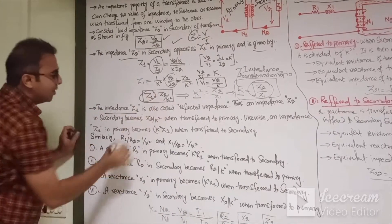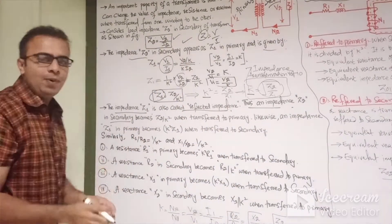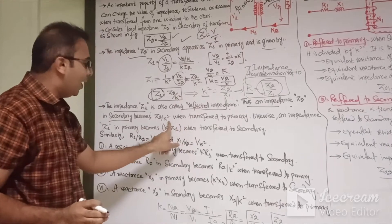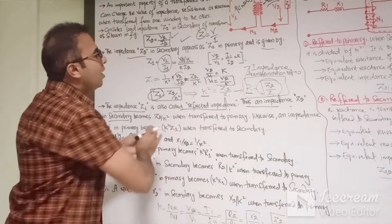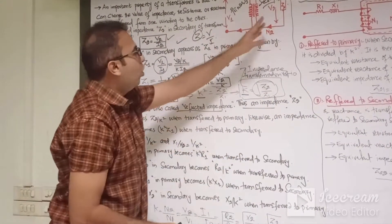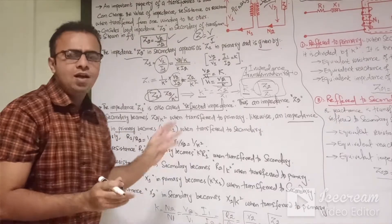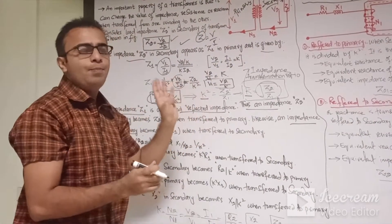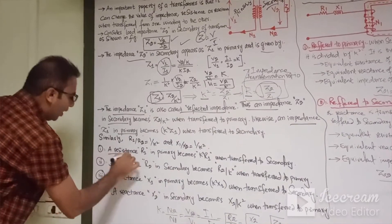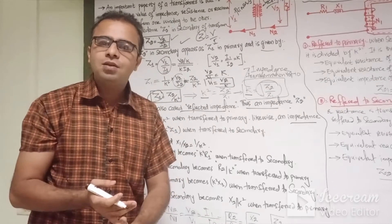This Z1 impedance is also called the reflected impedance. Thus, an impedance Z2 on the secondary side becomes Z2/K² when referred to the primary side. Likewise, an impedance Z1 on the primary side becomes K²·Z1 when transferred to the secondary side. For the complete impedance, we have both the resistance component and the reactance component in the transformer.